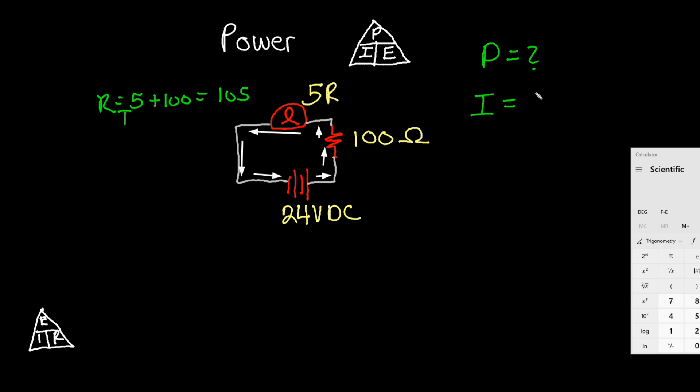Okay, it is E which is 24 divided by R which is 105. So we're going to round up to 0.23. So I equals 0.23 amp. So now we can calculate P.